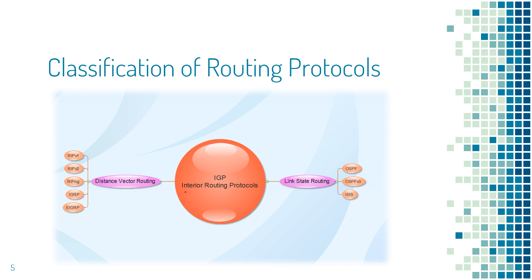IGP is further classified into two: link state routing protocol and distance vector routing protocol. OSPF and IS-IS fall under the link state routing protocol. RIP version 1, RIP version 2, RIP next gen, IGRP, and EIGRP fall under the distance vector routing protocol. The most commonly used IGP protocols are OSPF and IS-IS. They act as an underlay routing for most other protocols like BGP, MPLS, VXLAN, etc.